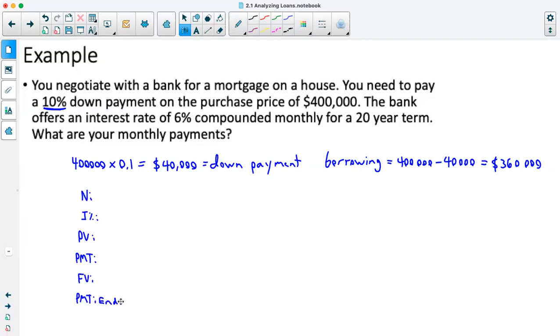So we'll start filling out our information for this. Our N is our amount of payments, or times we compound. So that's going to be our amount of years times how many times it compounds per year. So we have it compounding monthly, so that would be 12 times a year, times 20 years. So that is 240. Our I is 6. Our present value is how much we're borrowing, so negative $360,000. Our payment is what we're going to be solving for. Future value is going to be zero.